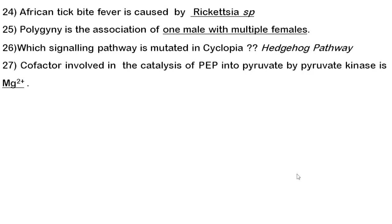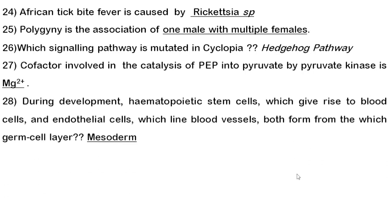Twenty-seventh question: the cofactor involved in the catalysis of phosphoenolpyruvate into pyruvate by pyruvate kinase is magnesium (Mg²⁺). You should also know the cofactors for cytochrome oxidase and nitrogenase enzyme.